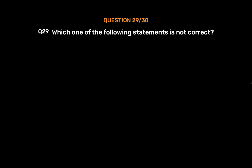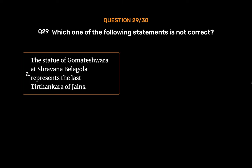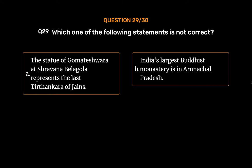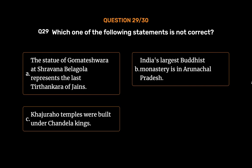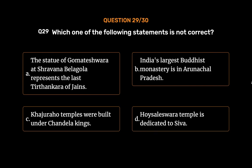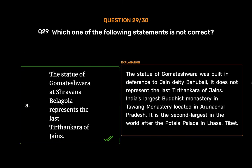Question number twenty-nine: Which one of the following statements is not correct? Option A: The statue of Gommateshvara at Shravanabelagola represents the last Tirthankara of Jains. Option B: India's largest Buddhist monastery is in Arunachal Pradesh. Option C: Khajuraho temples were built under Chandela kings. Option D: Hoysaleshvara temple is dedicated to Shiva. The correct answer is Option A. The statue of Gommateshvara was built in deference to the Jain deity Bahubali; it does not represent the last Tirthankara of Jains. India's largest Buddhist monastery, Tawang Monastery, is in Arunachal Pradesh and is the second largest in the world after the Potala Palace in Lhasa, Tibet.